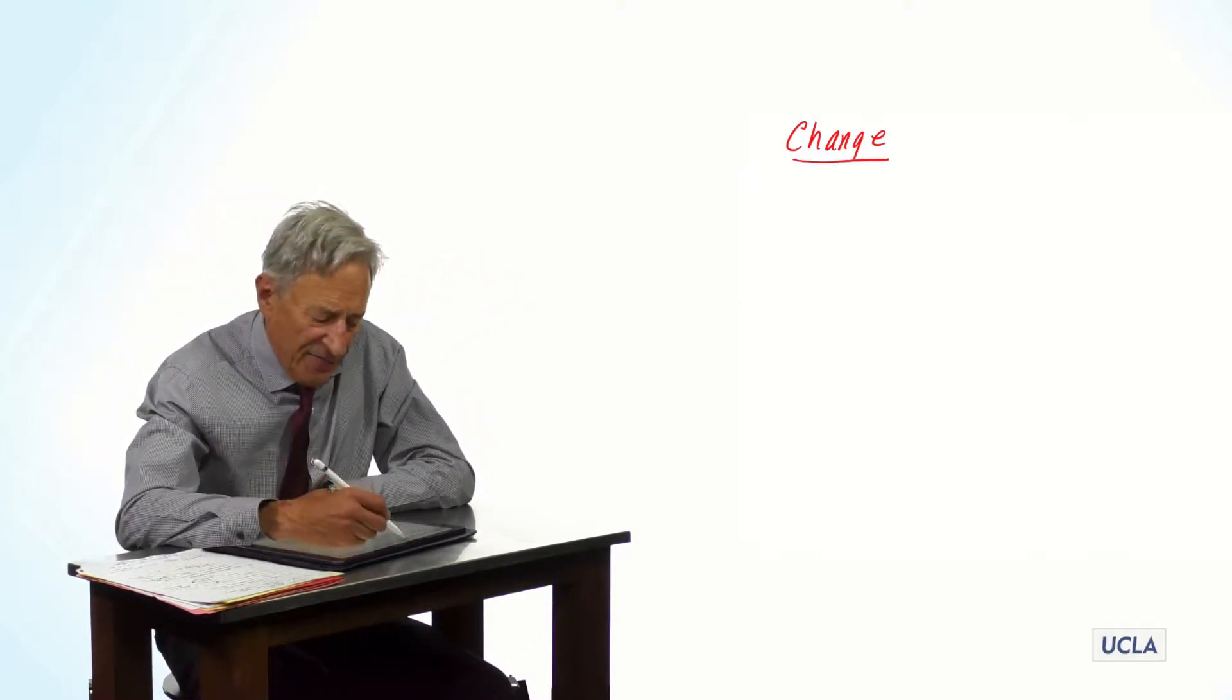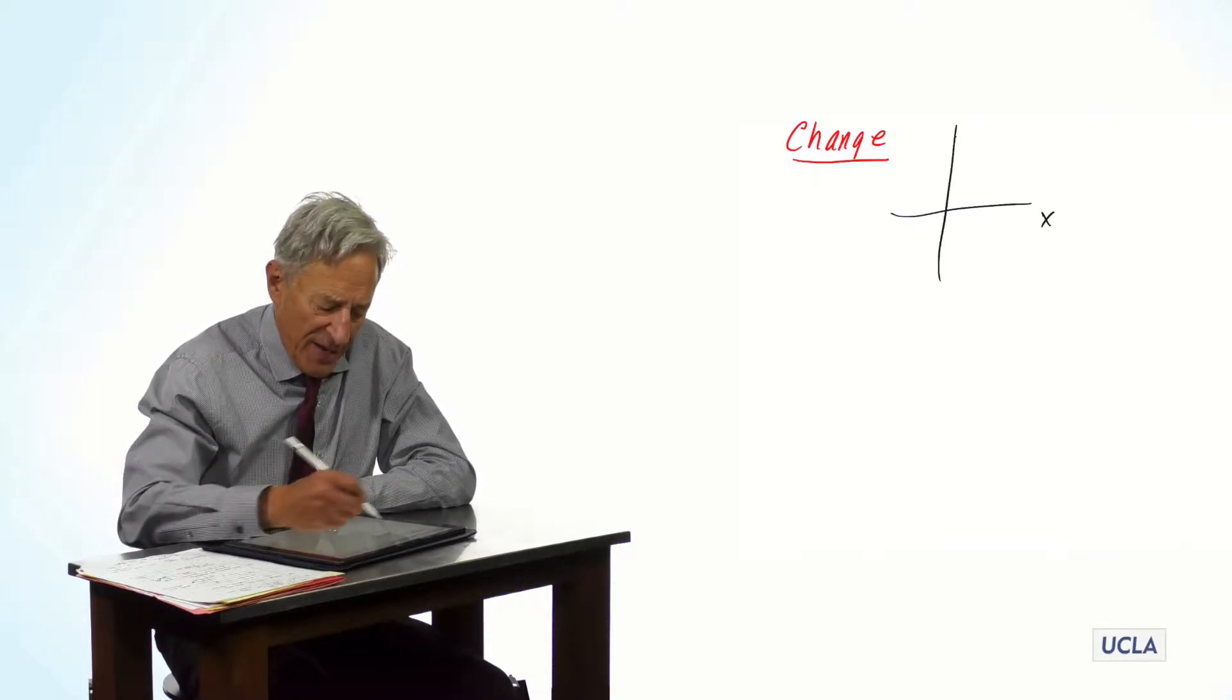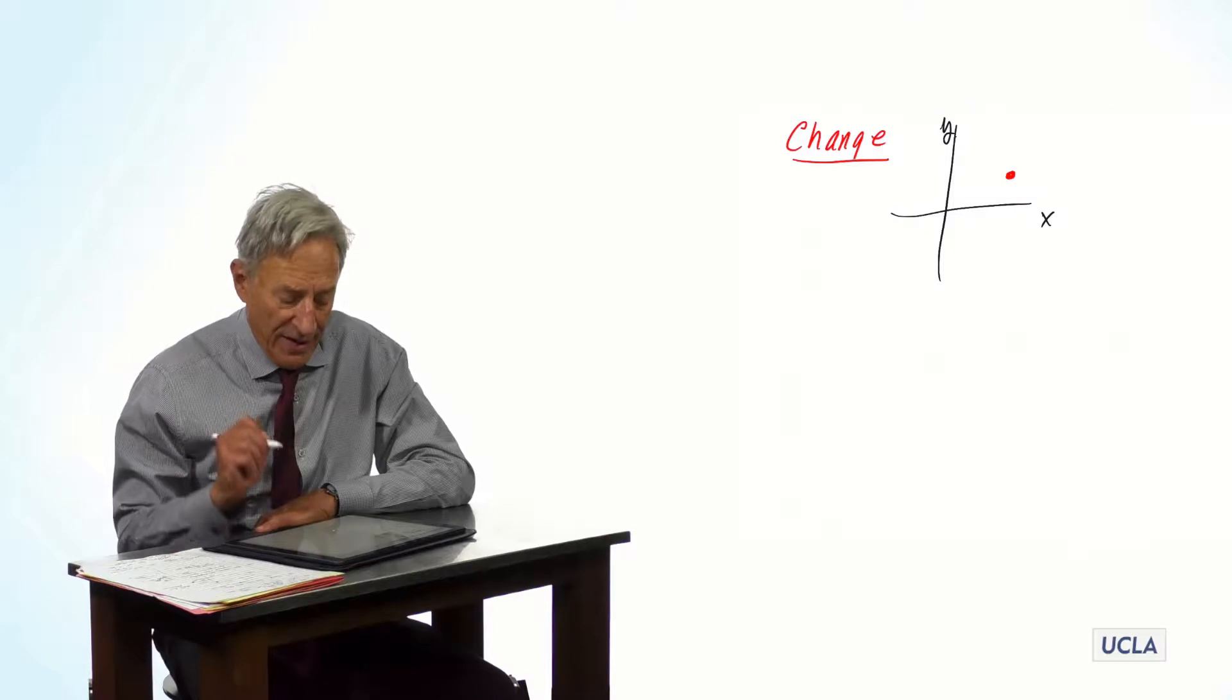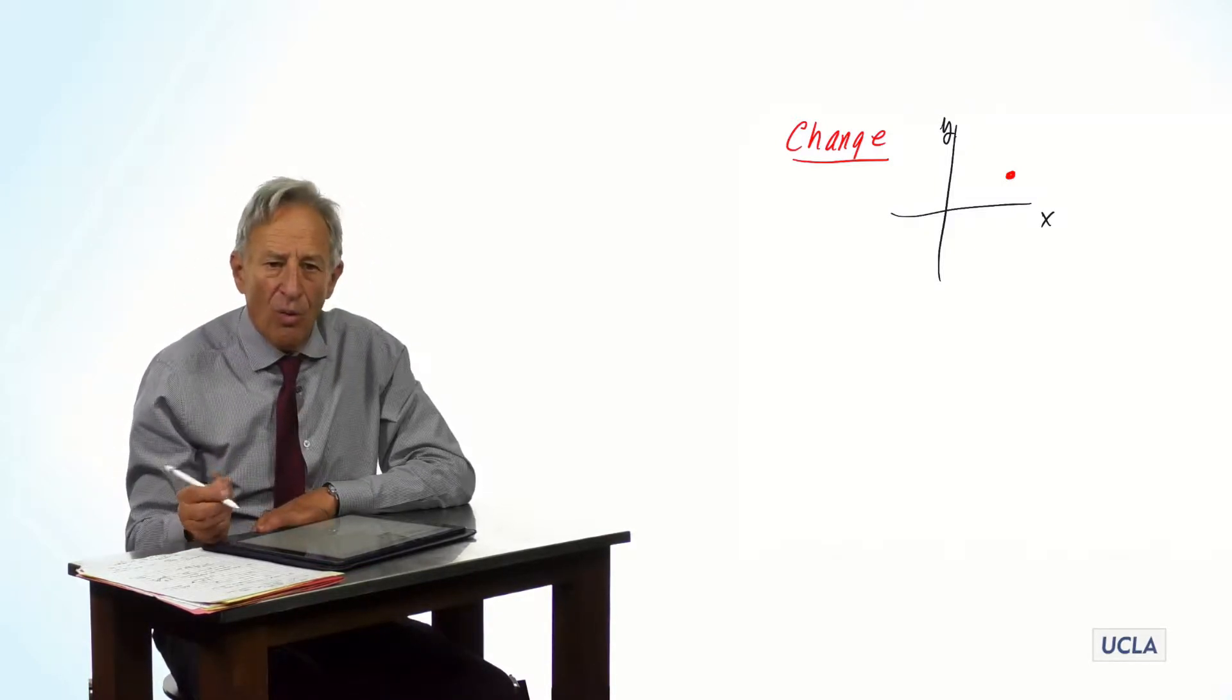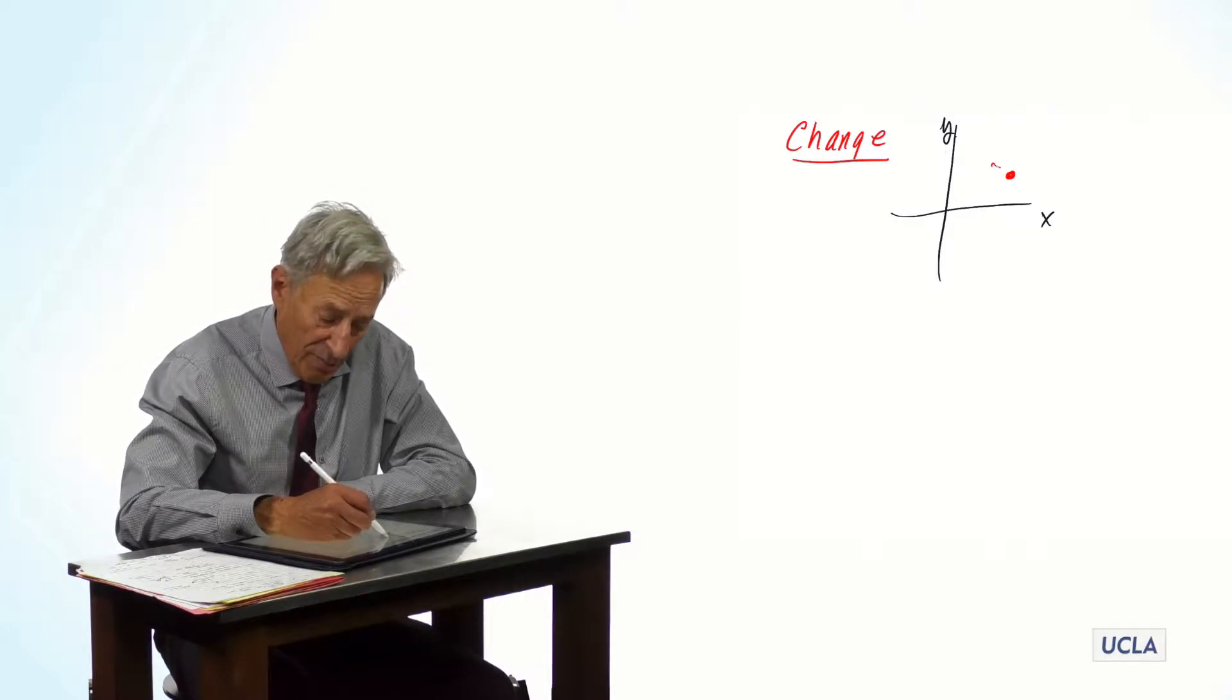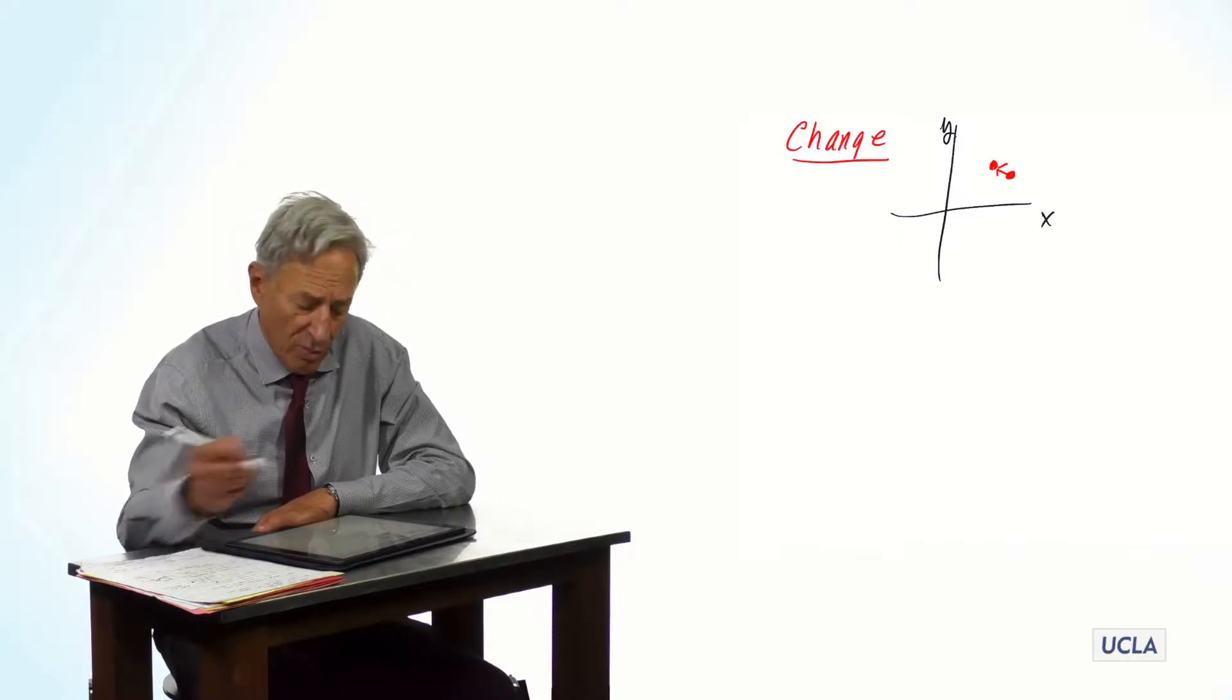So if the state of the system at a point in time is a point in state space, which I will show with a red dot to say that the system right now is at this point in state space, what is it going to look like later? Well, it's going to look like another point in state space. And over time, the system will have moved from that point to that point.